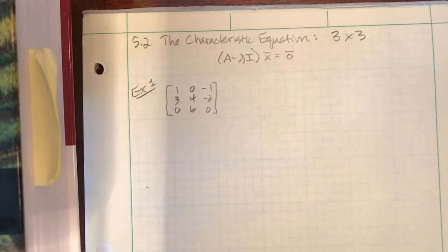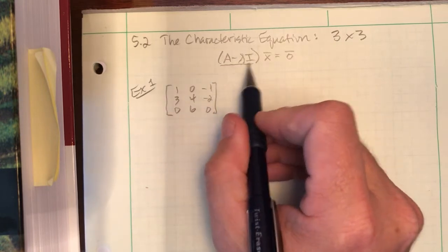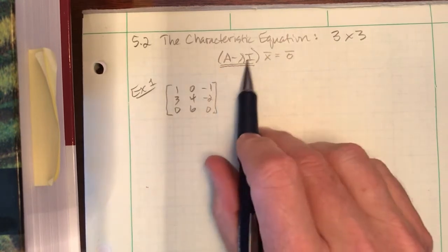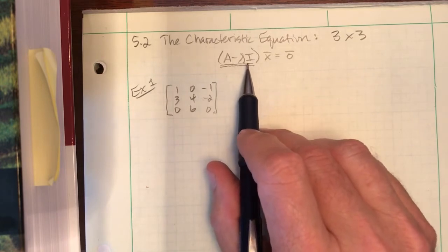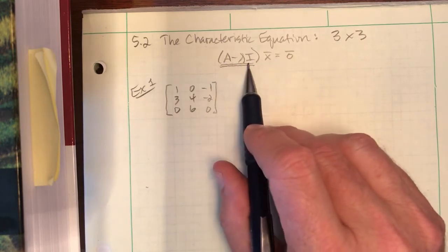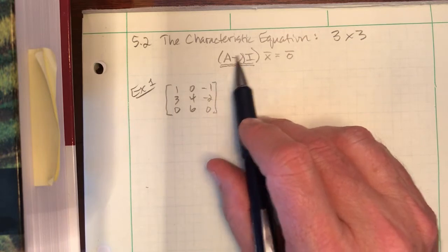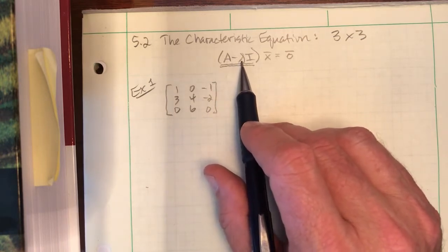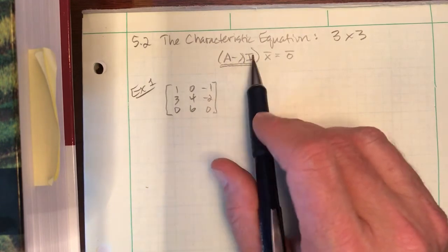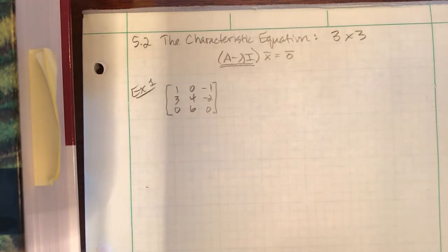We're now going to look at the characteristic equation for 3 by 3 square matrices. If you remember from the last video, the driving engine of how this happens is to focus on this matrix.